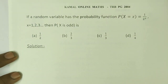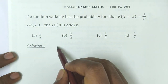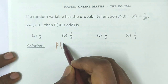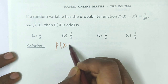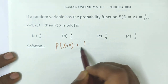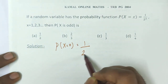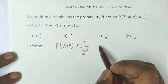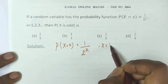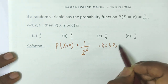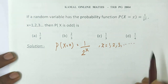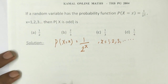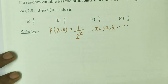The options are: 1/2, 2/3, 1/3, or 1/4. The probability function is defined as p(x) = (1/2)^x, where x takes values 1, 2, 3, and so on. The question asks us to find the probability that x takes an odd value.